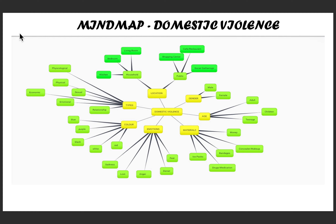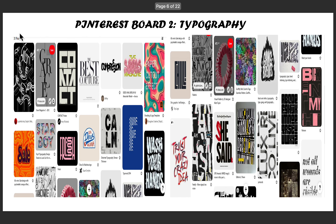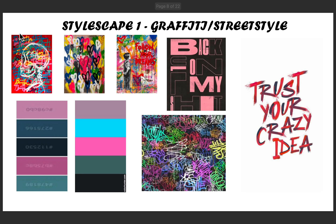I then created my Pinterest boards. I looked into things like typography, artistic styles, and super graphics themselves. My first Pinterest board was my super graphics board — I had about 30 pins on this. My second Pinterest board was my typography board with about 40 pins. My third Pinterest board covered artistic styles, including mixed media, Photoshop, and spray paint.